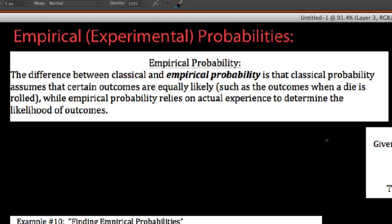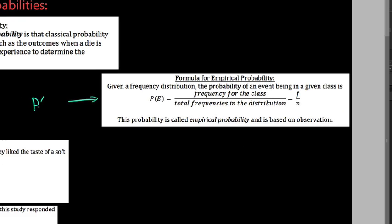So we do have a formula for empirical probabilities. It is almost the exact same thing as what you see for classical probabilities, but the probability of an event occurring is equal to frequency for the class, or F, divided by total frequencies in the distribution, or N. We're going to look at the frequency distribution we've got over here on the left, but just keep in mind, this is called an empirical probability, and it's based on observation.